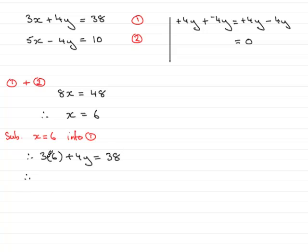Simplifying this, we find that 3 times 6 is 18 plus the 4y equals 38. Subtract 18 from both sides and then we have 4y equals 20. And dividing both sides by 4 leaves me with y equals 20 divided by 4 which is 5.